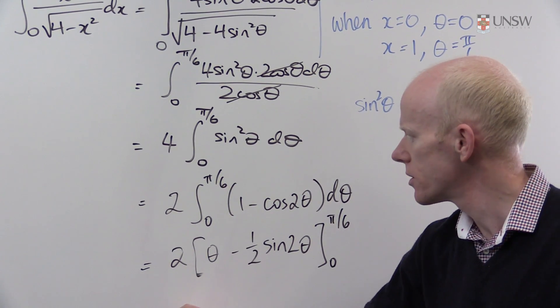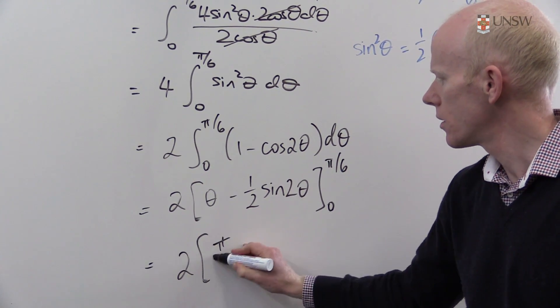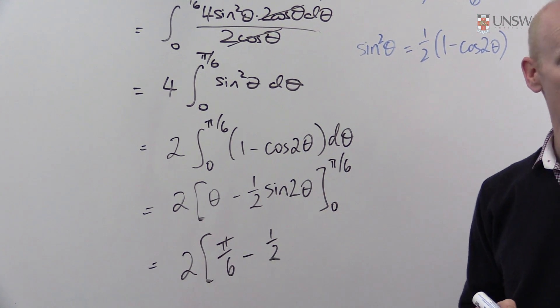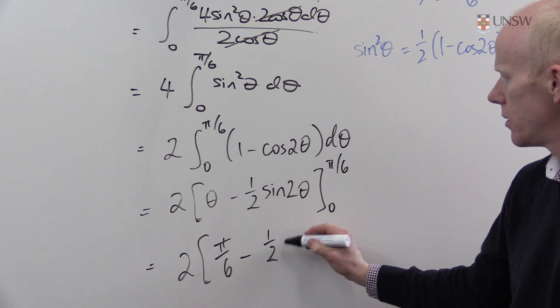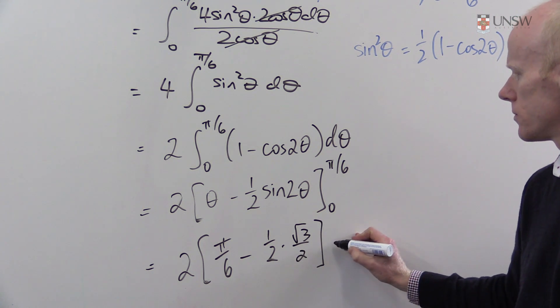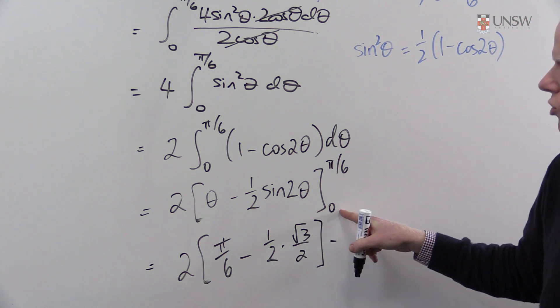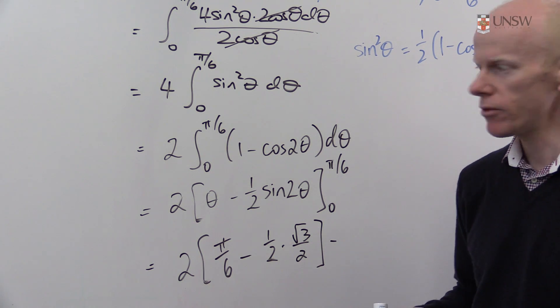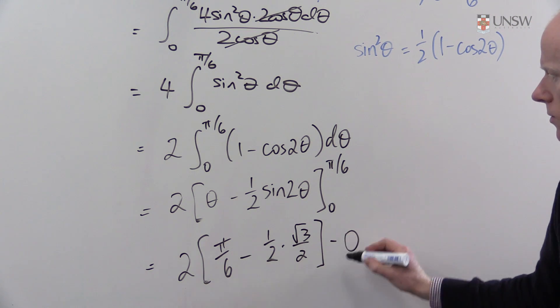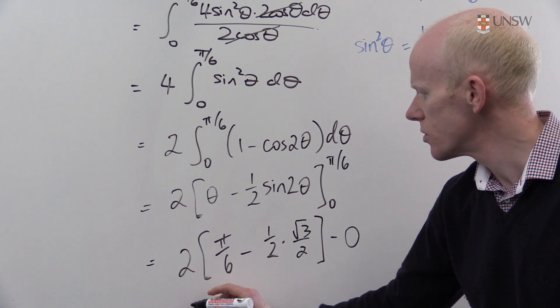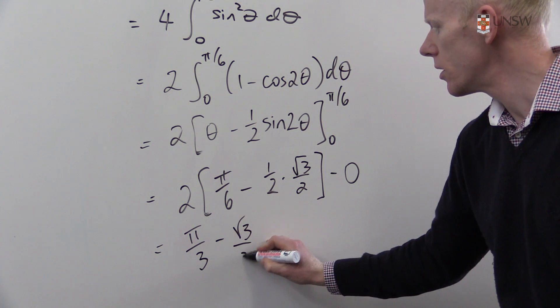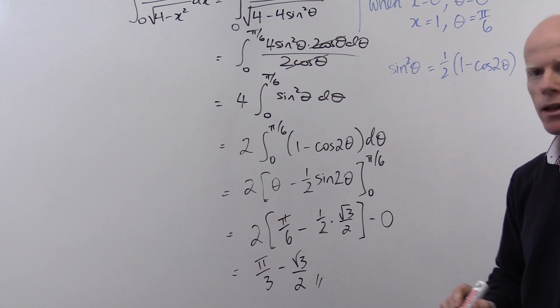Evaluating this gives me π/6 minus 1/2 sin(2 × π/6), which is sin(π/3) = √3/2. Subtracting the substitution of 0 in for θ, I have 0 minus sin(0), which is 0. Simplifying gives π/3 - √3/2, and we're done.